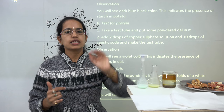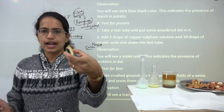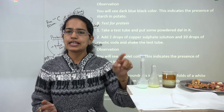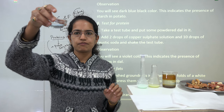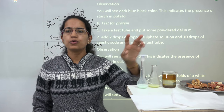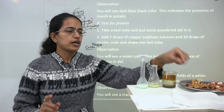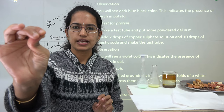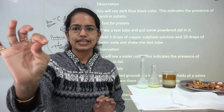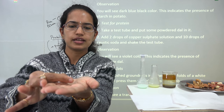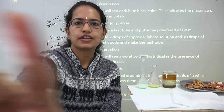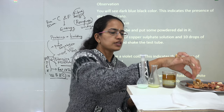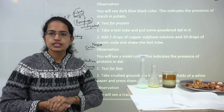So we have done the test of starch using potato and iodine, the test of fat using oil and blotting paper, and the test for protein using copper sulphate and NaOH with the two protein samples. Additionally, with a piece of walnut, pressing a small section with a finger and removing it reveals oil drops, showing the presence of oil or fat in the walnut.